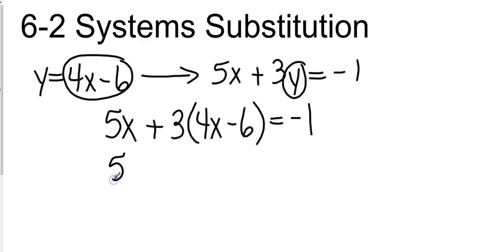Now we've got like terms, so we're going to have 5x. We're going to do the distributive property. So that's going to give me plus 12x and then positive 3 times negative 6 is negative 18 equals negative 1.